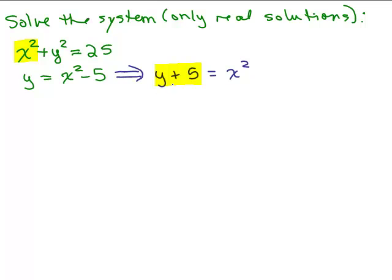So we're going to plug in y plus 5 into this equation. So we have x squared plus y squared equals 25. And we're going to plug in for my x squared this y plus 5. So that's what I'm replacing the x squared with. And I have plus y squared equals 25.